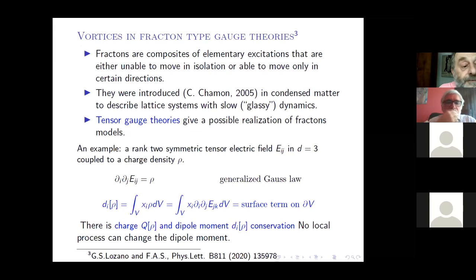Okay, now fractons. I think I will not have a lot of time. Fractons are composites of elementary excitations that are unable to move in isolation. That is, one without moving the other, or perhaps you can move one leaving the other not moving, but it's only in some directions. It's not the fractals of fractal theory. It's something which is rather recent. Well, they were introduced by Claudio Chamon in 2005 in glassy dynamics, then in gravitation and also in hydrodynamics.